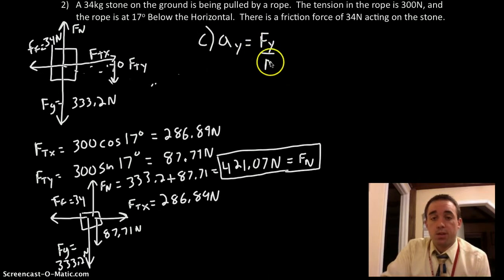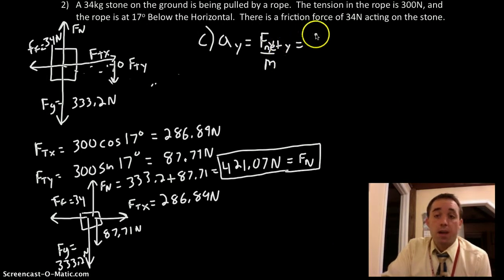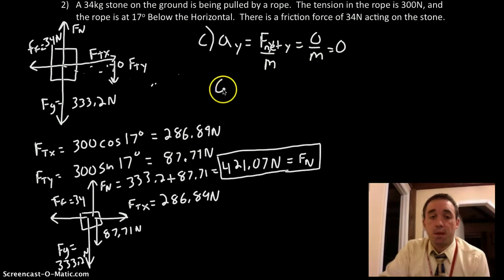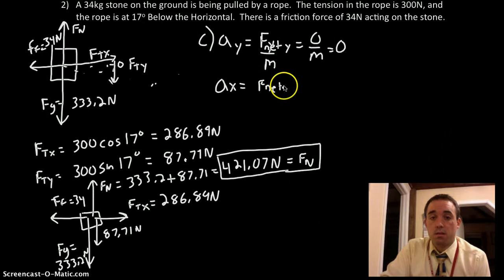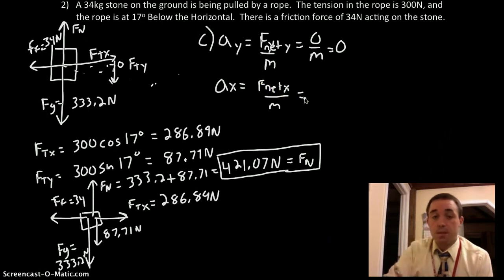ours is being pushed downwards at 17 degrees. So there's an applied force like that, where that's theta equals 17 degrees, and it is 300 newtons, an Ft of 300 newtons.